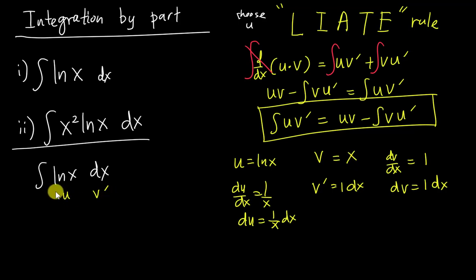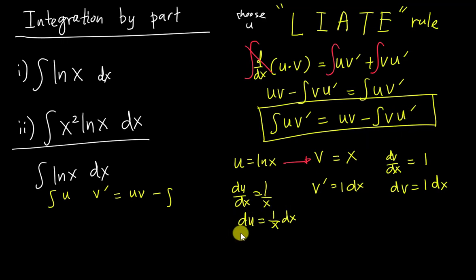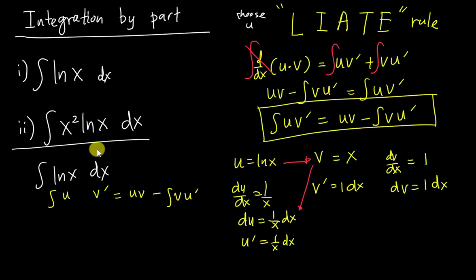The formula tells us: integral of u·v' equals u multiplied by v, minus the integral of v multiplied by u'. So we write u times v, then minus the integral of v times du. Here u·v is x·ln(x), and v·u' is x multiplied by (1/x).